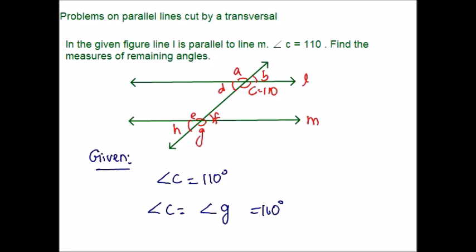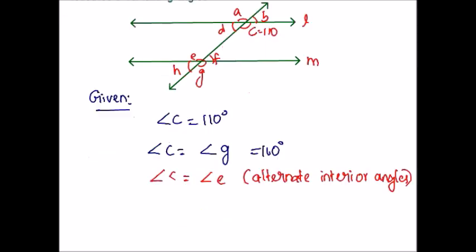Now let me check whether I have any alternate interior angles in the figure. Angle C and angle E — imagine a Z here. The angles within the Z are considered alternate interior angles. Alternate interior angles are equal, so angle E is equal to angle C, which means angle E is also 110 degrees.